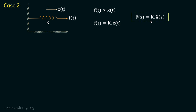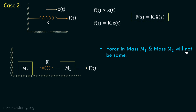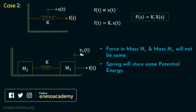Now let us consider a situation where we have a system with mass m1 and mass m2, connected by a spring having spring constant k, resting on a fixed surface. If we apply a force f of t on mass m1 to the right, the force on mass m2 will not be the same, because the spring stores some potential energy. Since the forces are different, the displacements will also not be the same. So if there is a displacement x1 of t in mass m1, there will be a displacement x2 of t in mass m2.